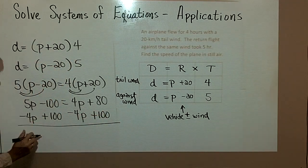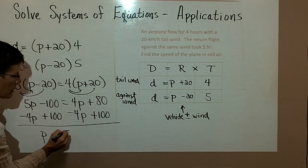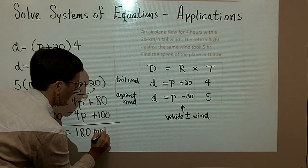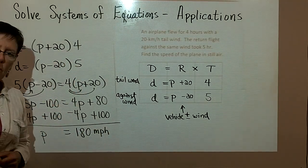And 5p minus 4p is going to give me 1p right here. And 80 plus 100 is going to give me 180 miles per hour is the speed of the plane.